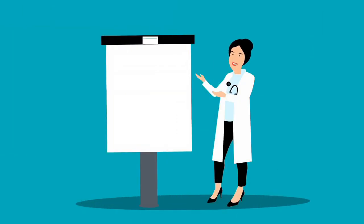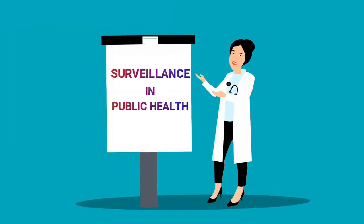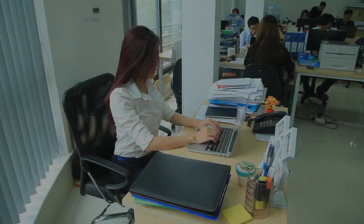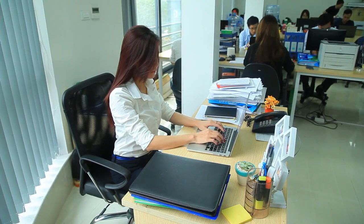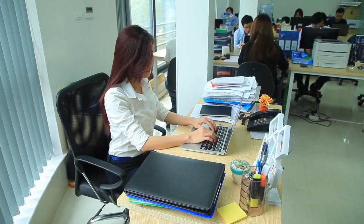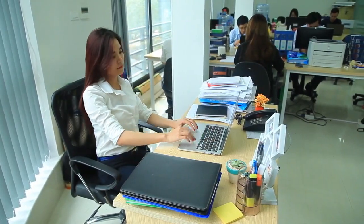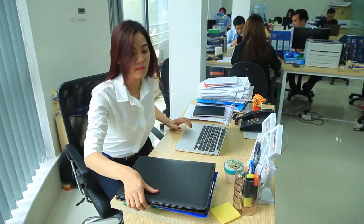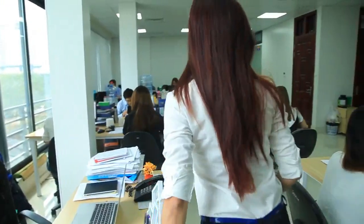Hello and welcome to this video where we are going to be learning about surveillance in public health. Public health surveillance is defined by the World Health Organization as the continuous, systematic collection, analysis, and interpretation of health-related data needed for the planning, implementation, and evaluation of public health practice.